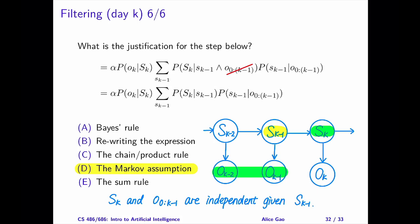The correct answer is D, the Markov assumption. This step removes the value O sub 0 to k-1 from the first term. We can remove this value since the state at time k only depends on the state at time k-1. This is the Markov assumption. Given S sub k-1, S sub k is independent of any previous observations. Again, you can verify this using D-separation. I will leave it as a practice problem for you.